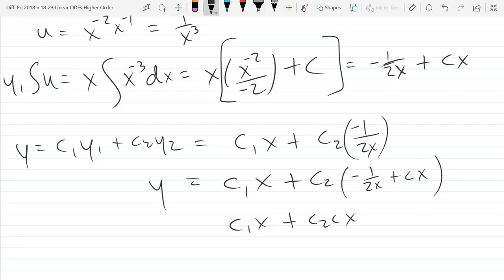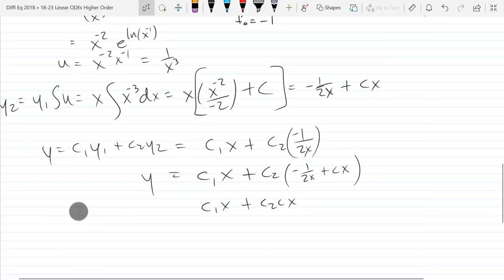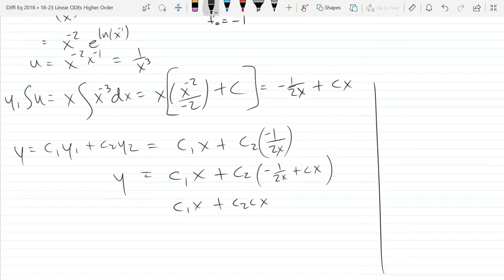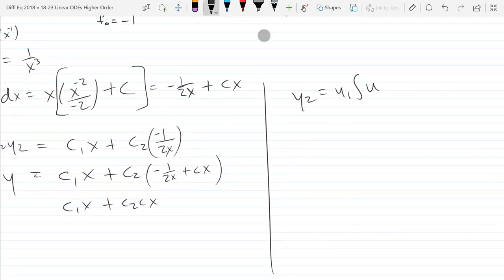Is it only for this case because we already had a C1 X term? Here's the reason. Y2 equals Y1 integral U. If you go with the plus constant, there's basically my first constant times Y1 right there. You can bring a constant at different times and get an equivalent answer.